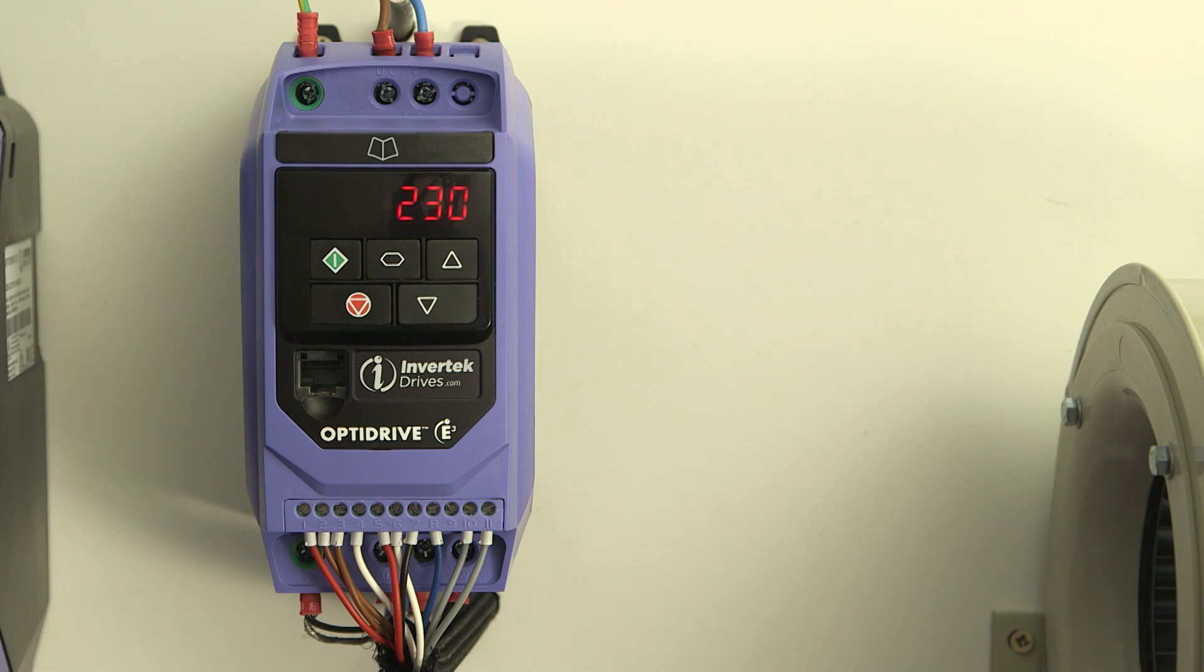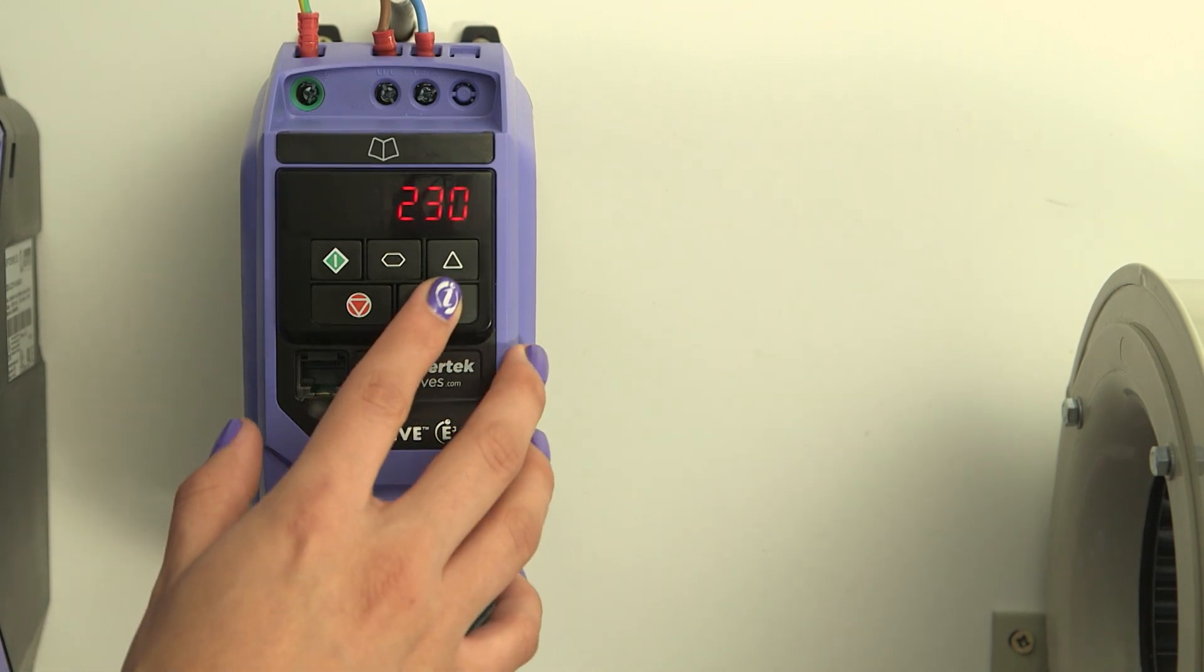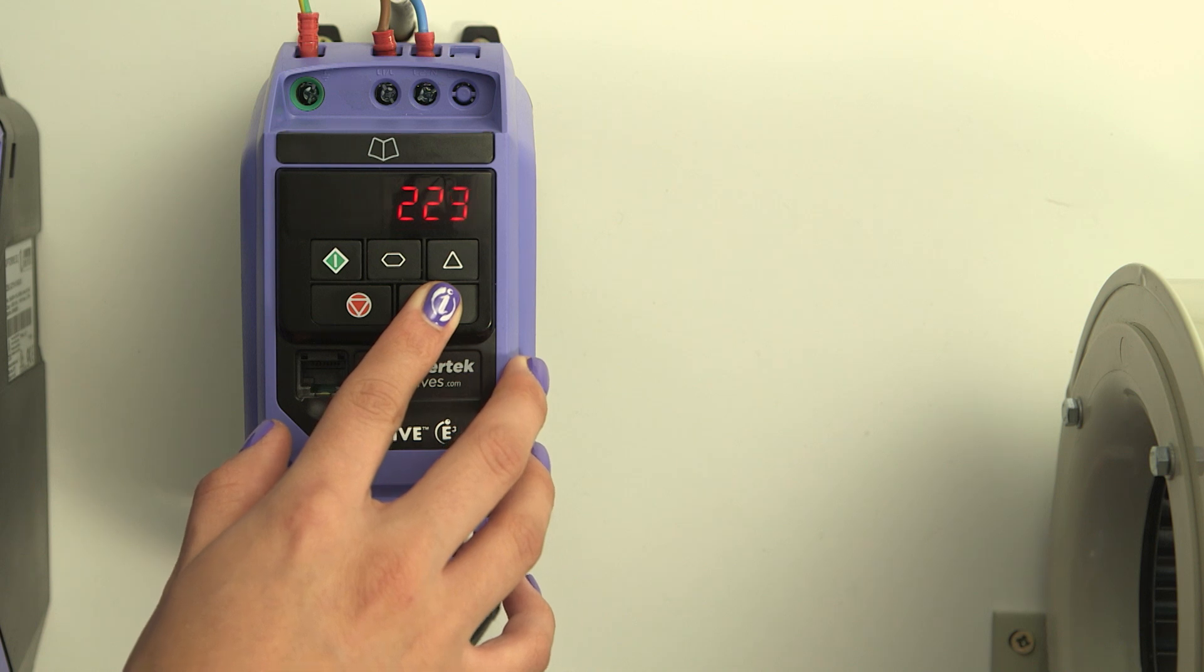This can be a bit tricky with these motors as we need the nominal voltage or back EMF that the motor produces at rated speed. This may be shown as UN on the rating plate or datasheet. The motor we have is 160 volts, so I'll put that in.